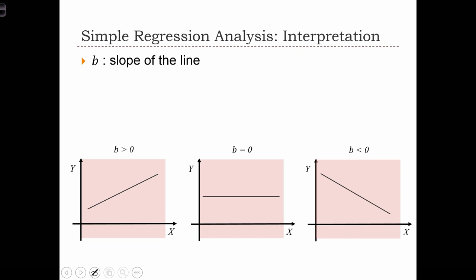b, the regression coefficient, is interpreted as the slope of the regression line. When b is greater than 0, we have a positive slope. So the rise over the run of this line is going to be positive.